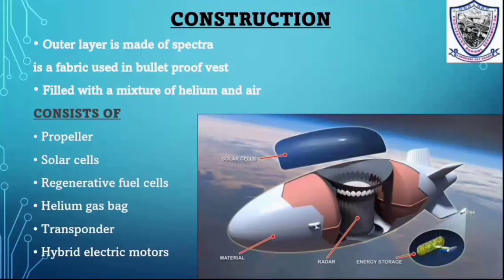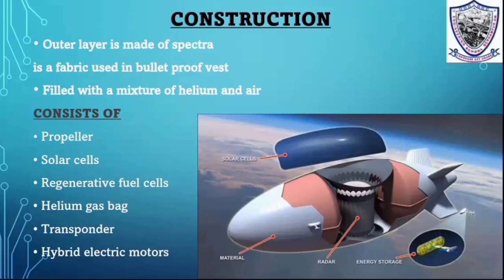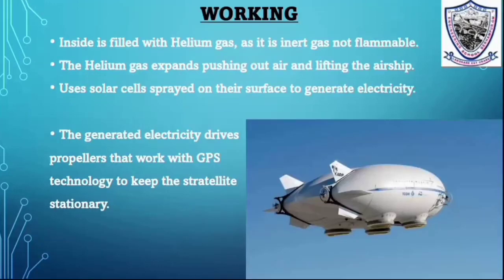Construction of Stratolite: The outer layer is made of spectra, a fabric used in bulletproof vests. It is filled with a mixture of helium and air. Components consist of: propeller, solar cells, regenerative fuel cells, helium gas bag, transponder, and hybrid electric motors. Inside is filled with helium gas. As helium gas is not flammable, it expands pushing out air to inflate the airship. Solar cells spread across the surface generate electricity. The generated electricity drives propellers that work with GPS technology to keep the Stratolite stationary.